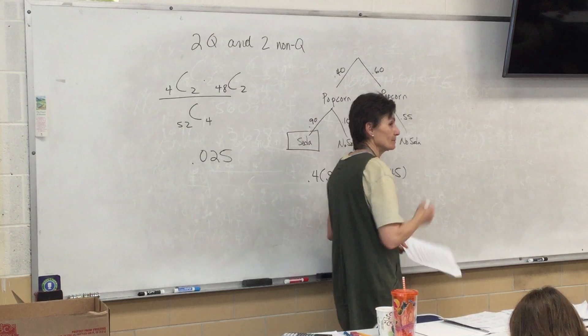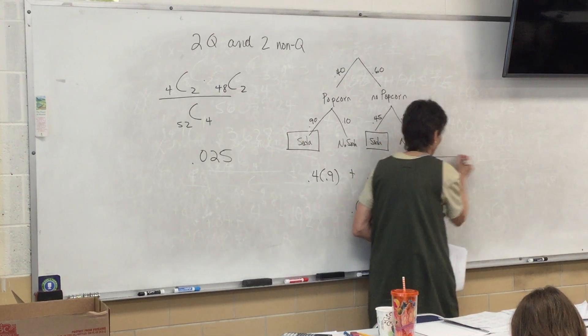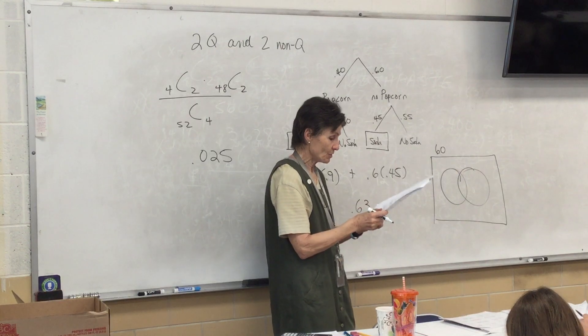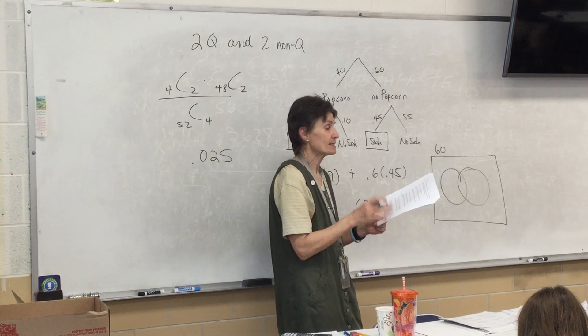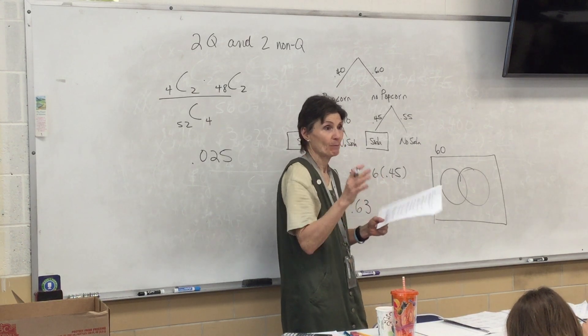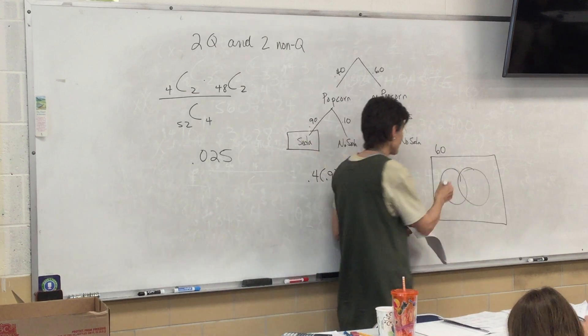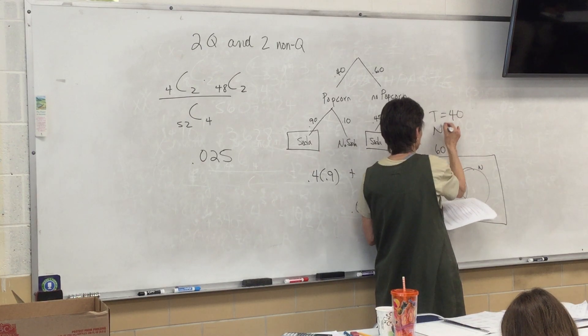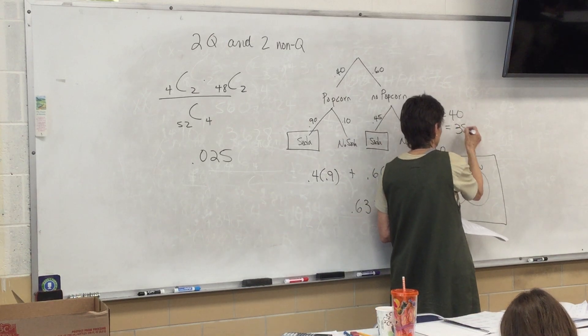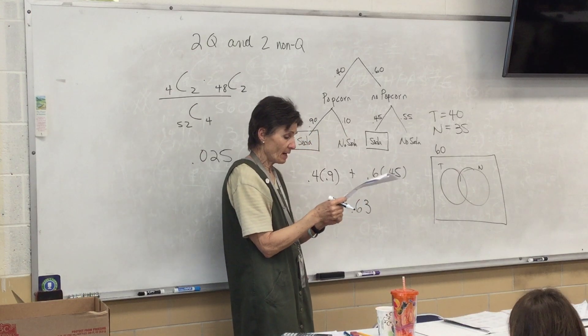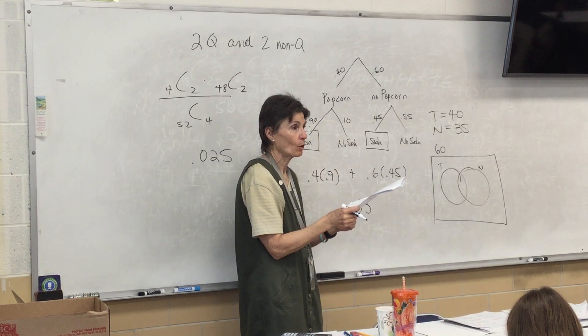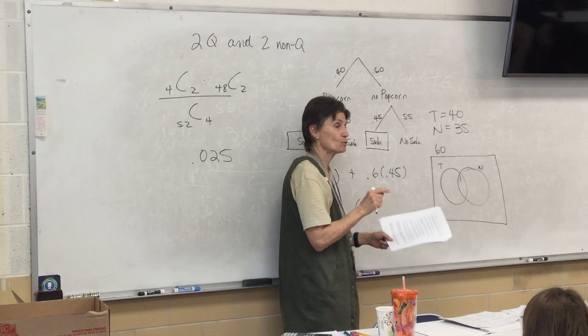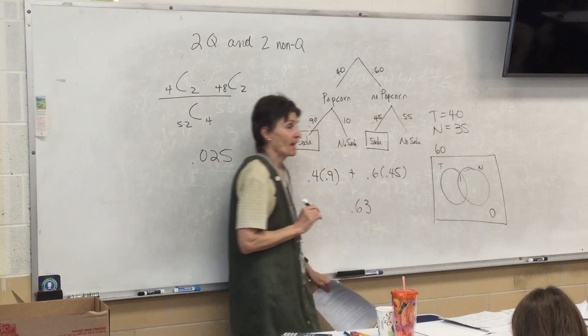All right. There are 60 students on the bus. I was just going to draw a box and put 60 here. Because the problem looks to me like a Venn diagram problem. Does it feel that way to you? We have teachers and nurses. And some that want to do both. That feels like a Venn diagram problem. So we have teaching and nursing. And teaching is a total of 40. Nursing is a total of 35. Everybody on the bus is either going to be a teacher or a nurse. Assuming every student on the bus expresses interest in at least one career, that means there's a zero out here. Everybody's in the circles.